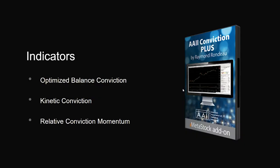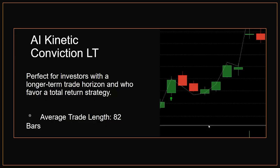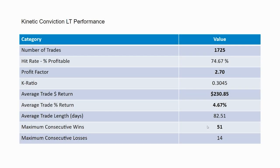As part of the AAII Conviction Plus, there's a total of about seven indicators, but those are the three I wanted to specifically highlight. In addition, AAII Conviction Plus includes three methods: the AI Kinetic Conviction LT, ST, and PT. The AI Kinetic Conviction LT stands for long-term and is perfect for investors who have a longer-term trade horizon and favor a total return strategy. The average trade length is 82 bars. Based on Ray's back-tested results over 1,725 trades, it had a hit rate of 75%, a profit ratio of about 2.7, and a K ratio of 0.30.